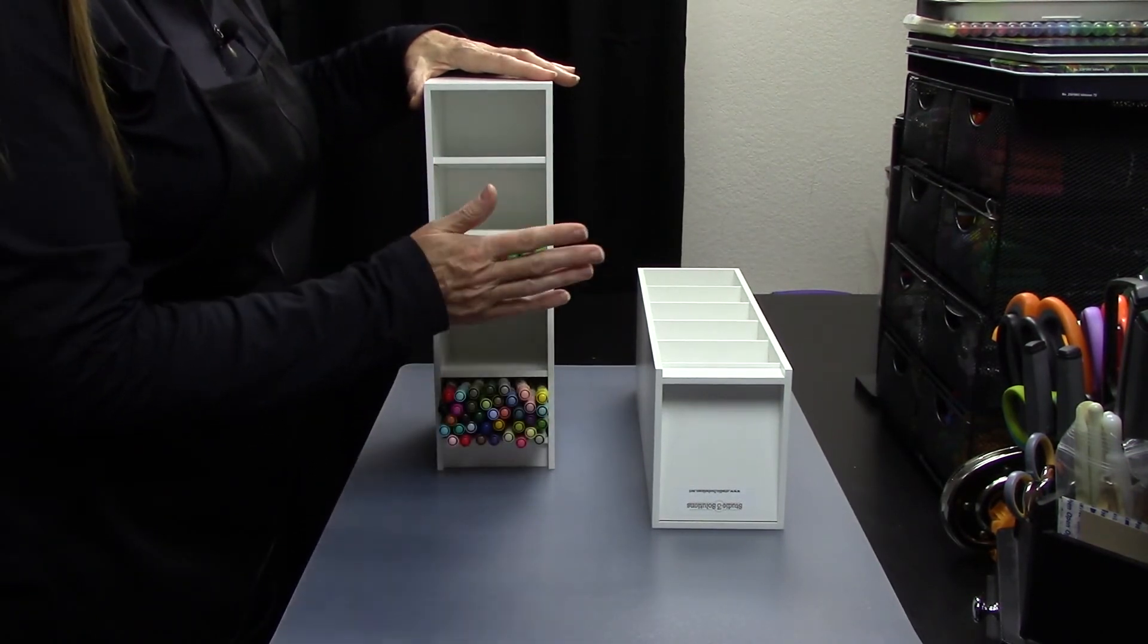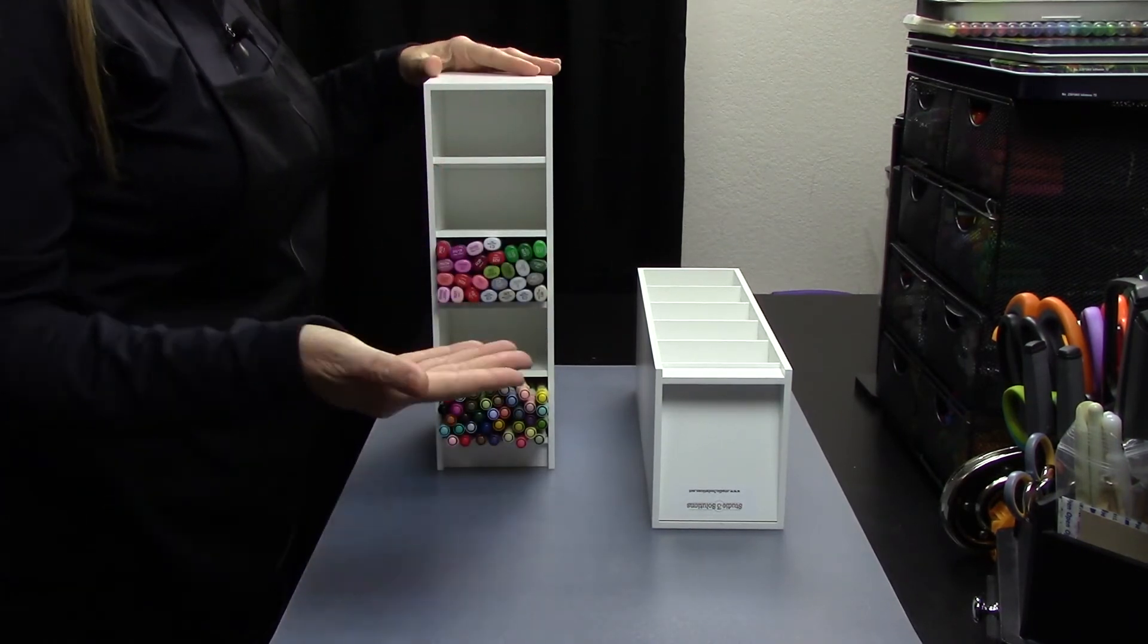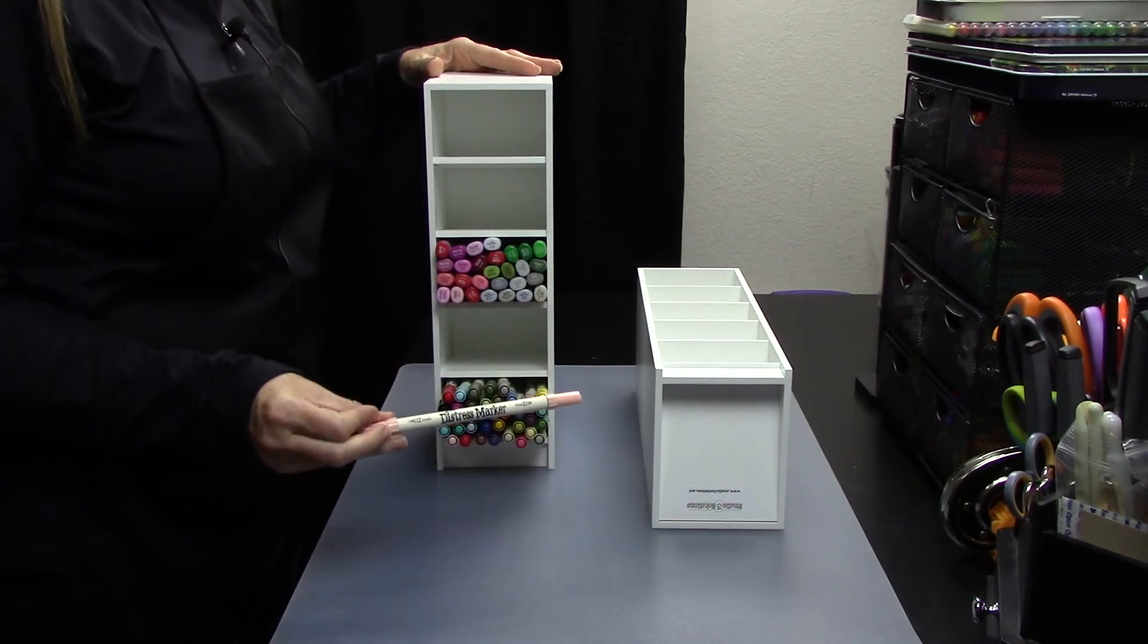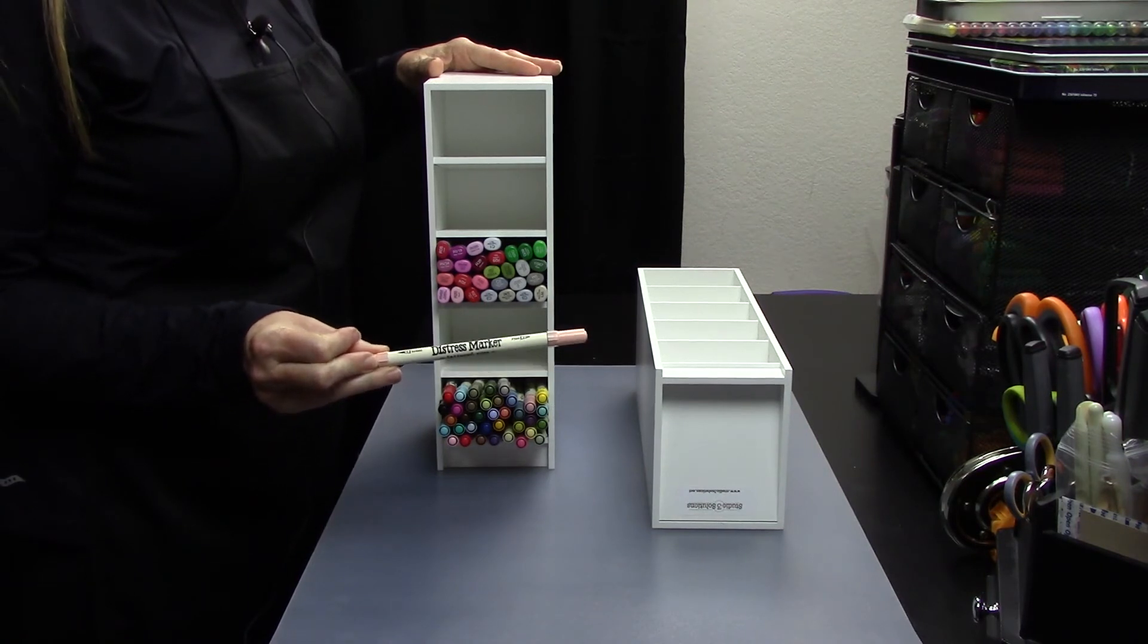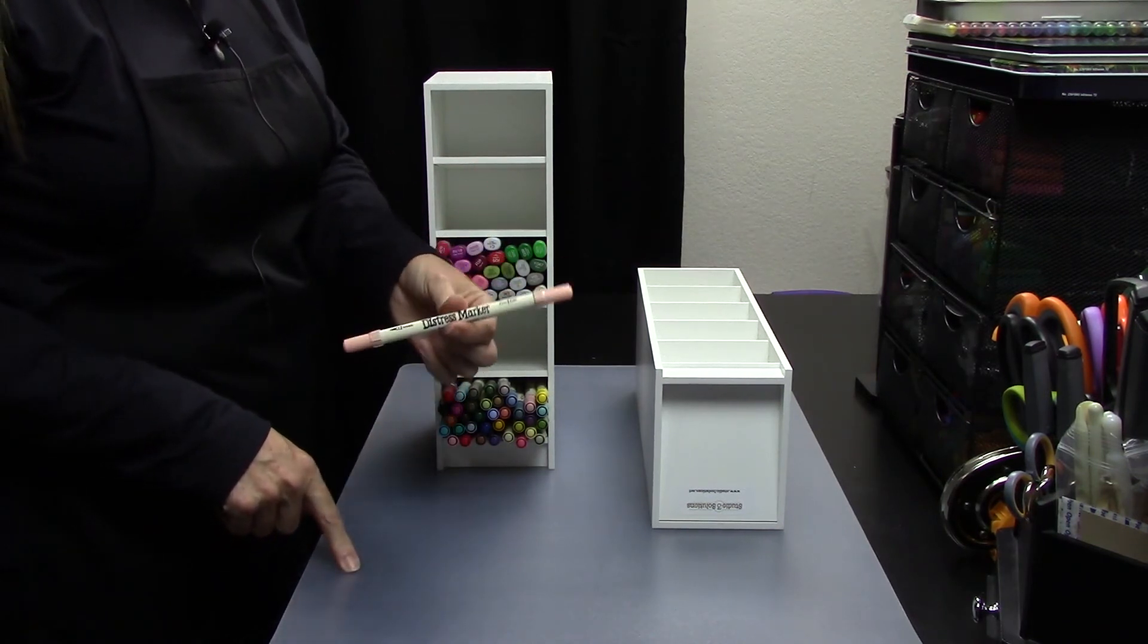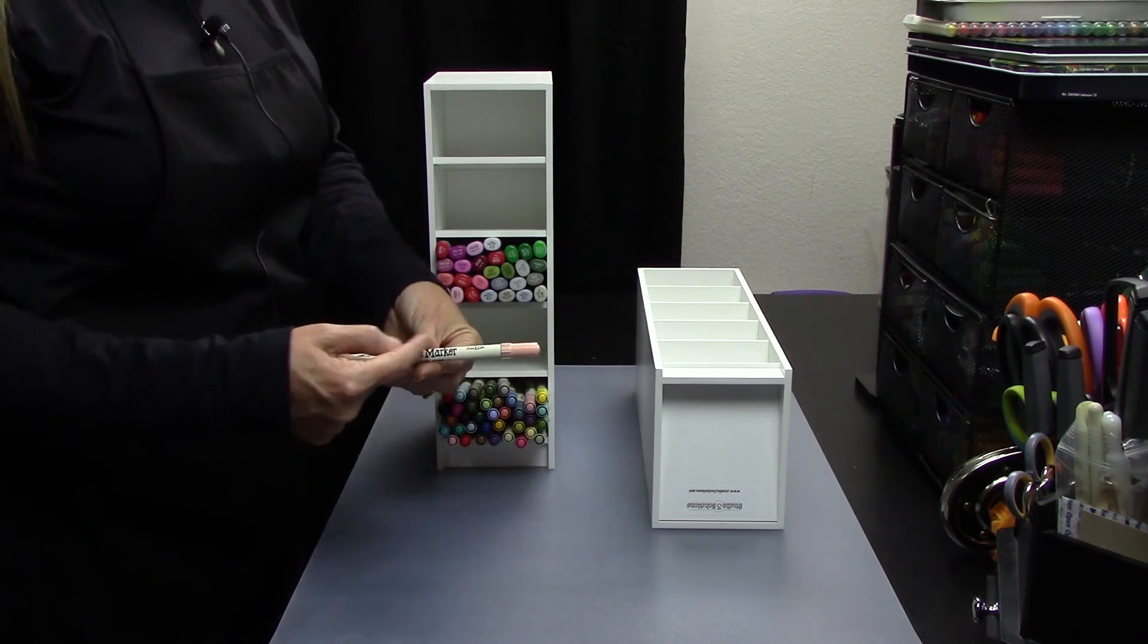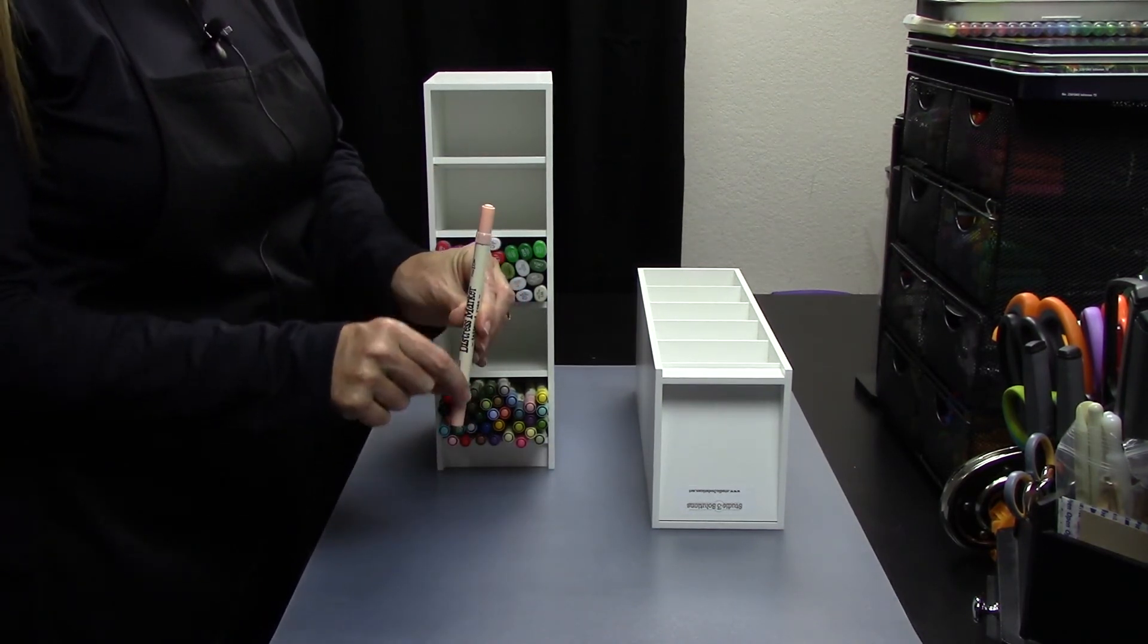The reason that these were made in this fashion, that they are vertical and all your pens are stored horizontally, is because many of the manufacturers, including the Distress Marker Manufacturer Ranger Ink, recommends that these pens be stored horizontally, not vertically. That is because there's a wicking mechanism in here that wicks the ink to both ends.